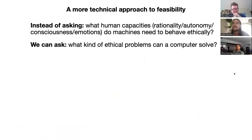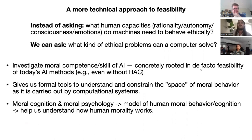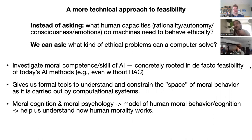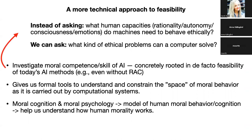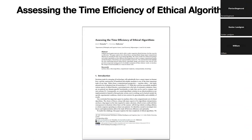The idea here is that we can investigate the moral competence or skill of AI systems and concretely root it in de facto feasibility — in the AI methods of today — without talking about opaque human capacities. This could give us formal tools to understand and constrain the space of moral behavior as carried out by computational systems, and it might also help us understand how human morality works and how it is constrained. A preliminary project I did last year raises this question, though it's a pretty rough paper.